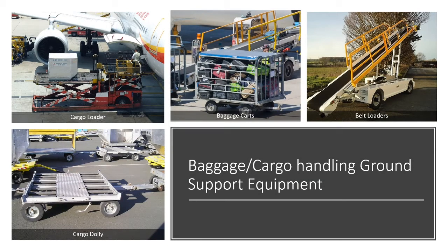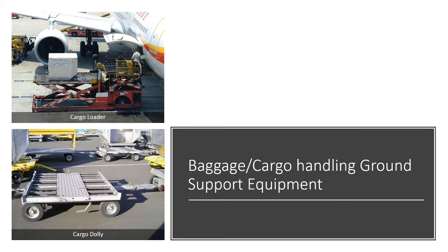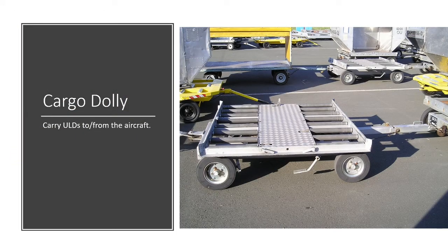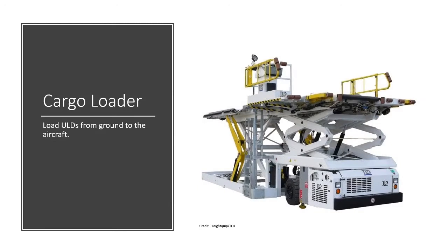We are going to talk about cargo dollies and cargo loaders that are used for loading and unloading of cargo on an aircraft. A cargo dolly is similar to a baggage car except it is designed not to handle baggage or routine luggage but for handling a ULD. Similarly, just like belt loaders load luggage into the aircraft's cargo compartment at a certain height from the ground, cargo loaders are used for loading and unloading of ULDs.